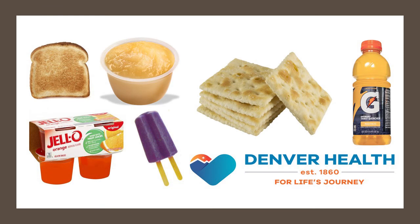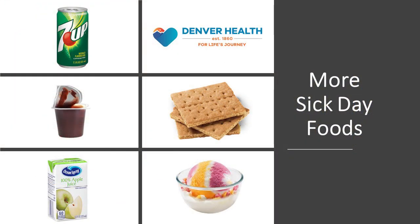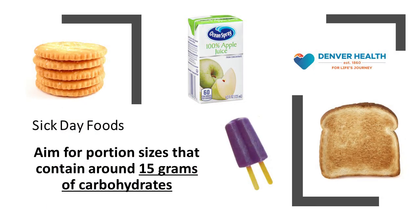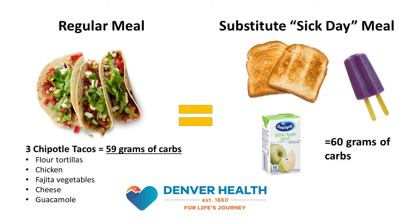Examples of ideal sick day foods include dry toast, regular jello, regular sports drinks, regular popsicles, saltine crackers, ice cream, regular soft drinks, and fruit juice. Try to consume these sick day foods in portion sizes that contain around 15 grams of carbohydrates. By consuming carbs in 15 gram portion sizes, this will allow you to estimate how much to eat and drink so you can still take your fast-acting insulin. For example, if a regular meal for you contains around 60 grams of carbohydrates, you can replace that with approximately 60 grams of these sick day foods.